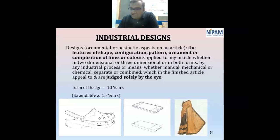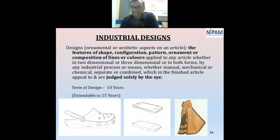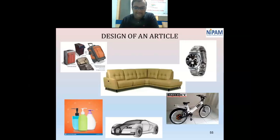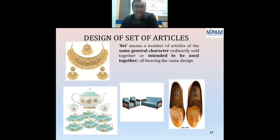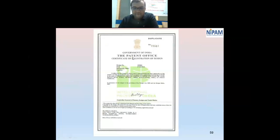For designs, any shape, pattern, configuration, ornament, or composition of lines and colors applied to any article — such as sarees or footwear — is protected. The design protection term is 10 years, extendable by five more years to a maximum of 15 years. Examples include bicycle and car designs. When two or more products share the same design and are sold together, they are called a set — like jewelry sets or sofa sets. A registered design is evidenced by a Certificate of Registration of Design issued by the Government of India.